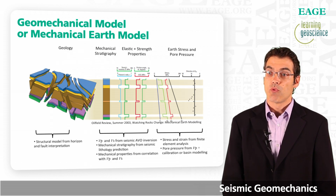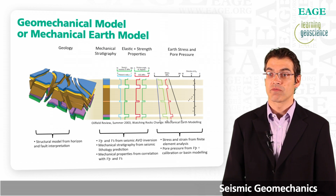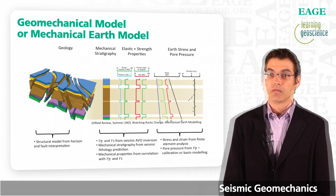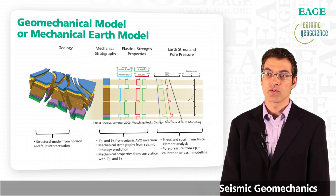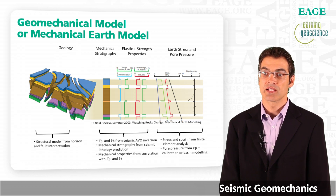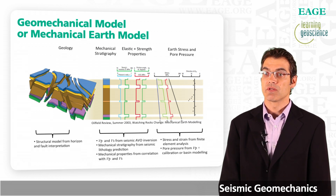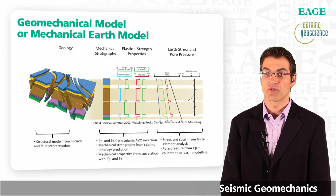Pore pressure as an input to a mechanical earth model may be derived from seismic interval velocities or tomographically derived velocities using a suitable calibration process or basin modeling. Stress and strain cannot be directly derived from seismic data, but they are derived by finite element analysis — in the same way that the mechanical integrity of a bridge can be derived by finite element analysis of the stresses and strains within the structure.